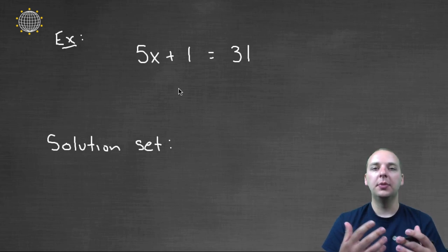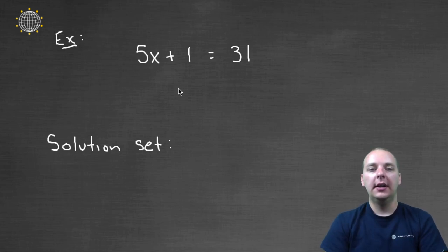For this one, my main concern is simply how do we write our answer? Again, this example is pretty small. I think we can see that the answer would be x equals 6, because 5 times 6 is 30, and 30 plus 1 makes 31.